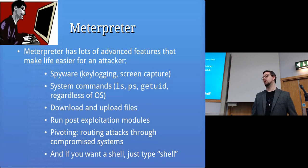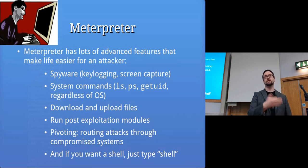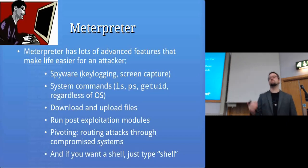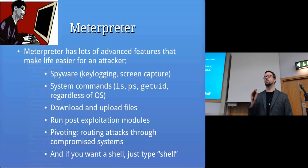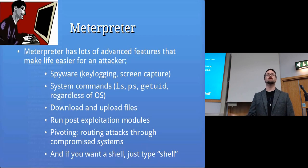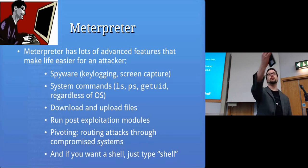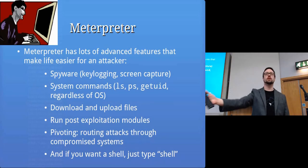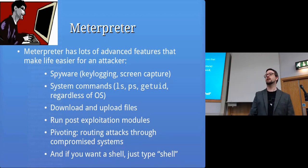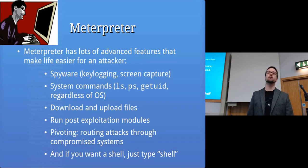You can run post-exploitation modules to find out whether you're in a virtual machine, gather information, and do pivoting — where you route your attack through the computer you've just compromised. So if I hack into your computer and want to attack everyone else's computer without revealing my IP address, I do it via your computer and everyone else just sees your IP address. If you want a shell in Meterpreter, you just type 'shell' and it gives you one.